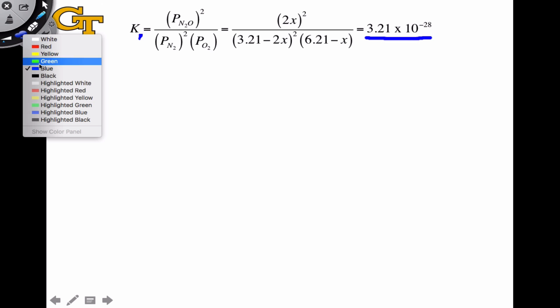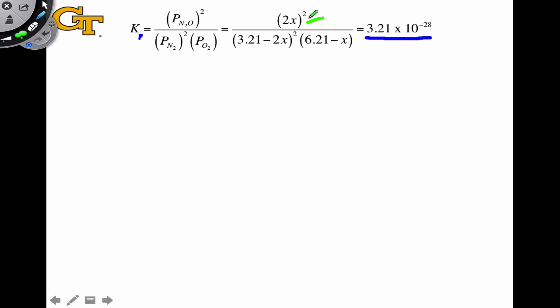Here's where things may start to look a little daunting as you get into these problems. We've got an equation that is second degree in x in the numerator and looks like third degree in x in the denominator. This is going to be a mess to solve for x. Luckily for us, there is a nice workaround, particularly when the K value is very small. 3.21 times 10 to the negative 28 is a very tiny number, and since x shows up in the numerator of this ratio, that suggests that x is probably going to be a very tiny number. However, that means that the difference between a number like 3.21 and even twice the value of x is going to be pretty darn close to 3.21. And likewise, the difference between 6.21 and x is going to be pretty darn close to 6.21.